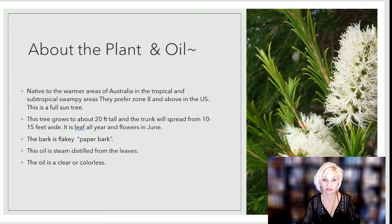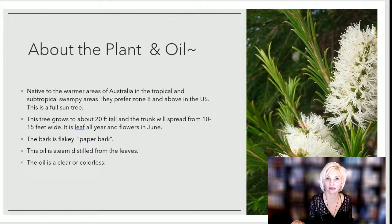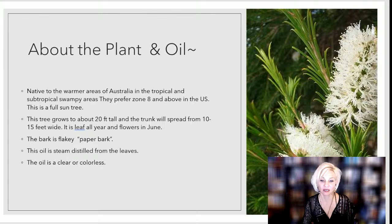As you can see in the photograph here, the leaves look kind of like little tiny pine needles. It grows little white blossoms that look like the bottle brush tree. Its bark is kind of papery like the birch tree. In Australia it likes to live in tropical and subtropical swampy areas. In the US it is zone 8 and above, and it is a full sun tree — it really loves the sun.